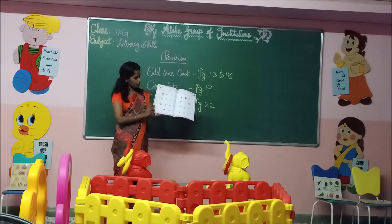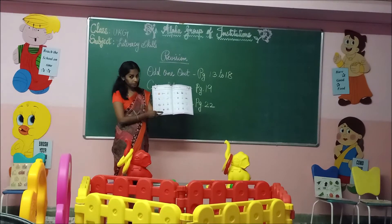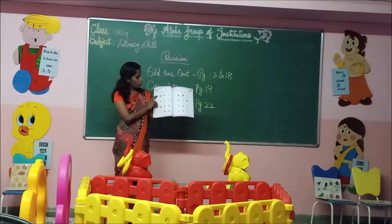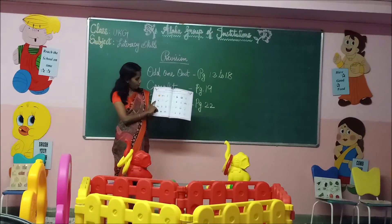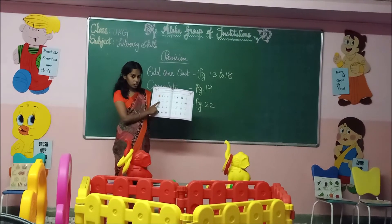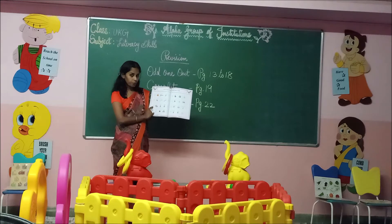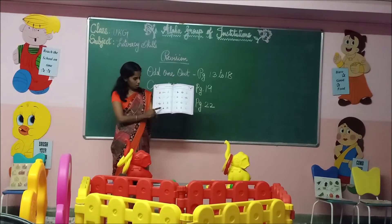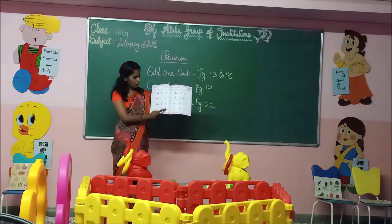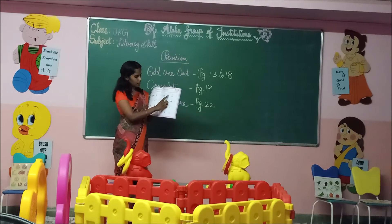Move on to the next page — page 16. O — Orange. P — Parrot, Pencil. Q — Queen. R — Rose, Rainbow. S — Star, Sun.